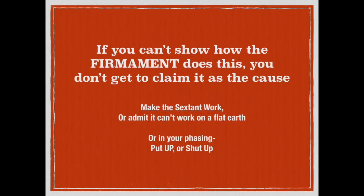The challenge is very simple: you either show me how the firmament does this and corrects these refractive indexes by angle of degree, or you can't use it as an excuse for why a sextant actually works on a flat Earth. Here's a lesson in science — if you're going to make a proposal such as 'the firmament corrects this angle so that everything works out right,' you have to actually show how it would do that. If you can't show how it would do that, you're just talking out of your tail end, and you don't get to use it as an excuse or an argument.